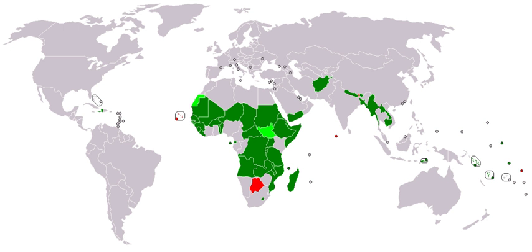Indoor air pollution in developing nations is a major health hazard. A major source is the burning of biomass — three billion people across the globe rely on biomass in the form of wood, charcoal, dung, and crop residue as their domestic cooking fuel. Because much of the cooking is carried out indoors in environments that lack proper ventilation, millions of people, primarily poor women and children, face serious health risks. Globally, 4.3 million deaths were attributed to exposure to indoor air pollution in developing countries in 2012, almost all in low- and middle-income countries. The Southeast Asian and Western Pacific regions bear most of the burden with 1.69 and 1.62 million deaths respectively.